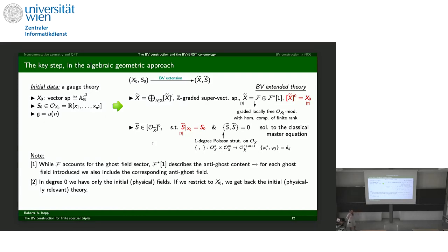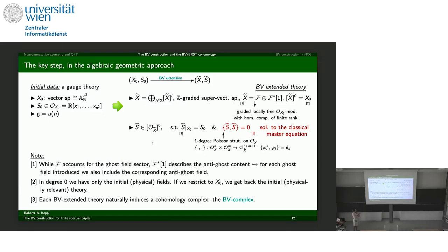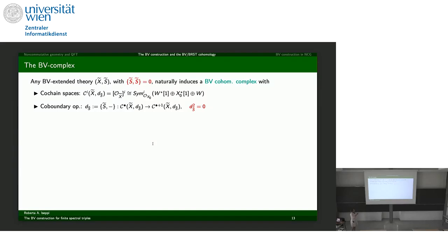The extended action S̃ is a degree-zero function over the space of regular functions including ghosts and ghosts for ghosts. In degree zero, the action functional doesn't change — we still have our initial physical action. The bracket structure is of one degree, and we ask that S̃ satisfies the classical master equation. This condition allows us to associate a BV complex: a cochain complex where the cochain spaces in degree i are the degree-i parts of the graded algebra, and the coboundary operator is given by taking brackets with the action.